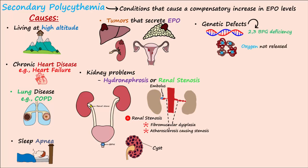Genetic defects resulting in a 2,3-bisphosphoglycerate deficiency cause hemoglobin to hold on too tight to oxygen, which is therefore not adequately released to tissues, leading to a compensatory increase in EPO release. Treatment with or abuse of anabolic steroids will also increase levels of EPO.